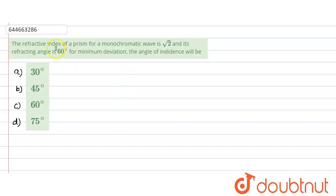Hello everyone, let us start with our question. In this question, what is given? Refractive index of a material for a monochromatic light is given as root 2, and the refracting angle is given as 60 degrees. This is for minimum deviation. We need to find the angle of the prism.